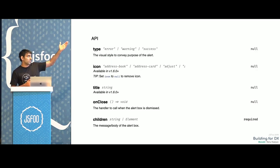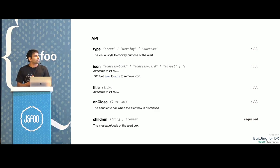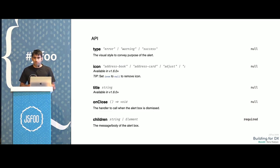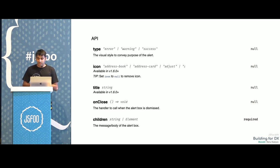We can see that the Icon prop was introduced in version 1.6 and would only be available from that version. This reduces our maintenance effort — documentation is always in sync with our source code. If we're making any changes in a particular component, documentation is right next to it, and we make sure you're updating documentation in that same PR.